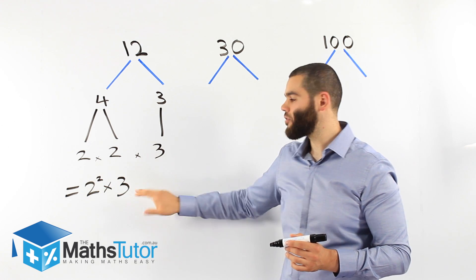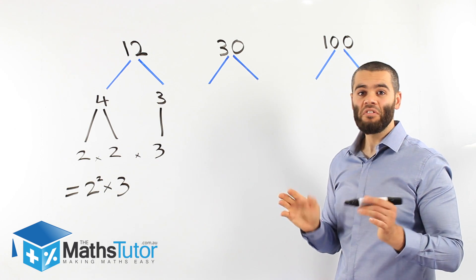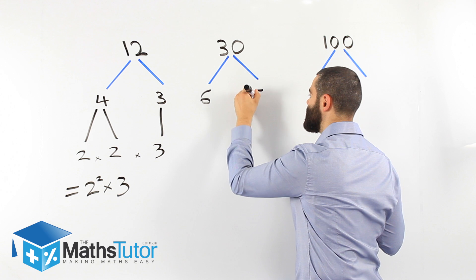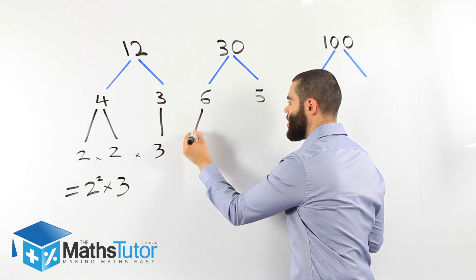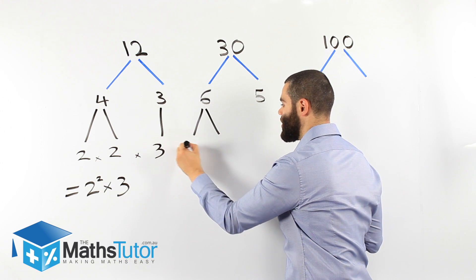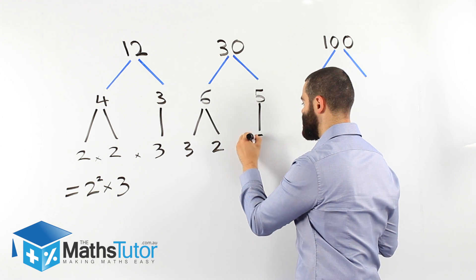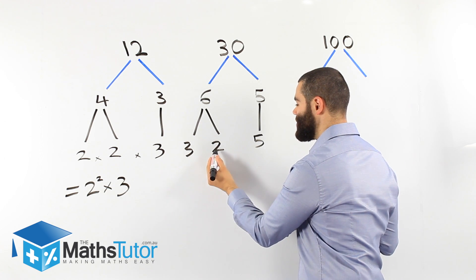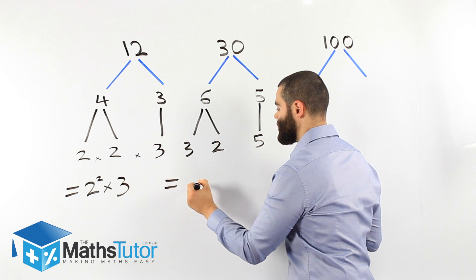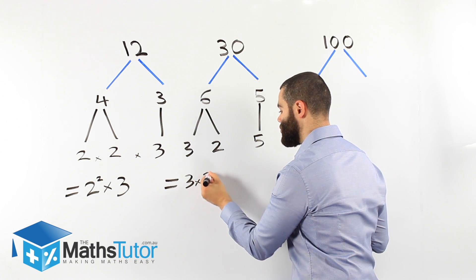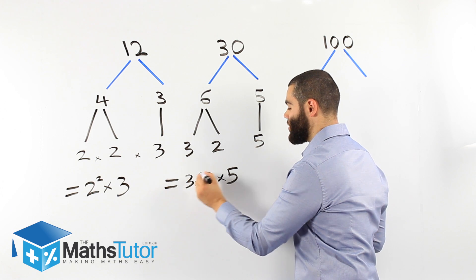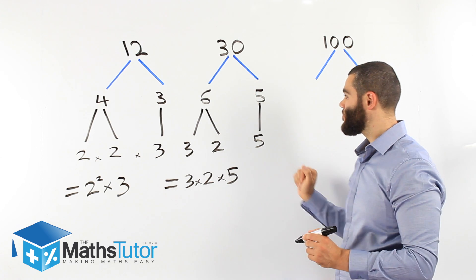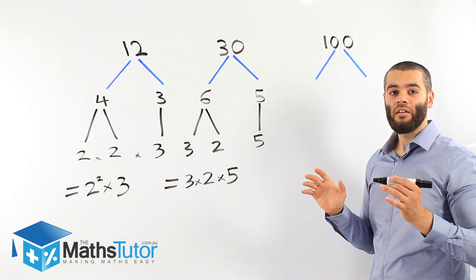Now for thirty. We look for the factors of thirty — I'm going to choose six times five. Six breaks down into three times two, and five is a prime number so it stays as five, since its only factors are five and one. Three is prime, two is prime, and five is prime. So our answer is three times two times five — these are the prime numbers that multiply together to make thirty.